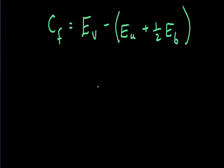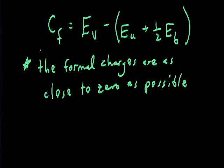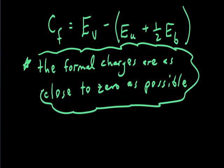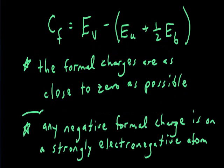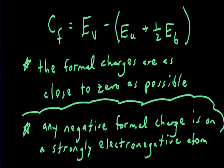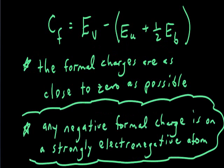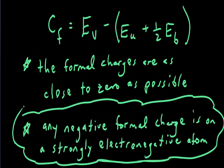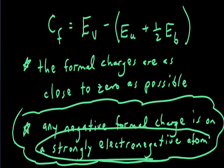Once calculating formal charge for the atoms in the Lewis structure, there are a couple of criteria to help steer us toward which structure is more likely to be the real structure. One is that the formal charges we calculate for each atom are as close to zero as possible. Second, if we do get non-zero values, and if those happen to be negative, a negative formal charge on a strongly electronegative atom indicates a more likely structure.